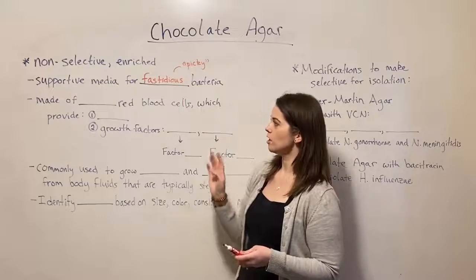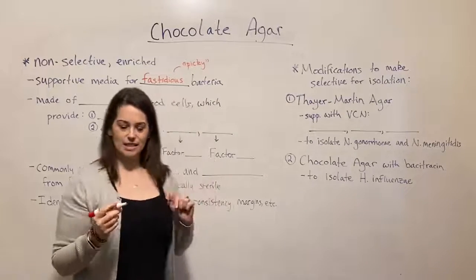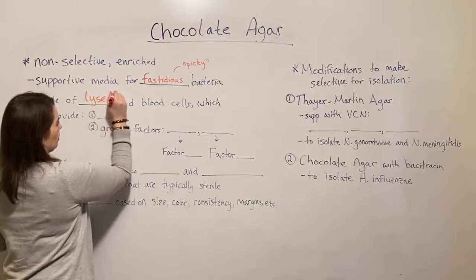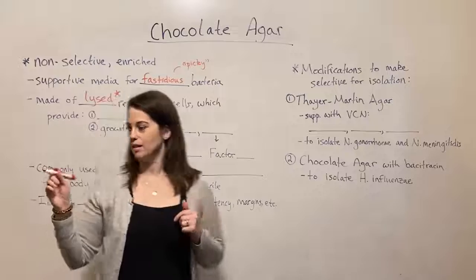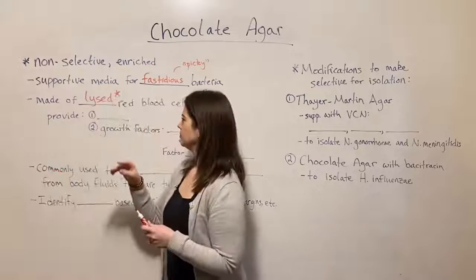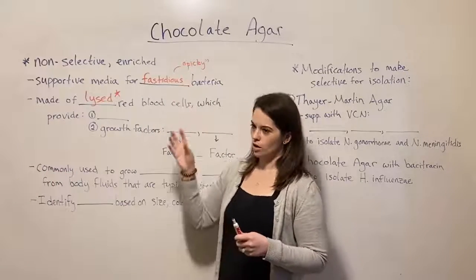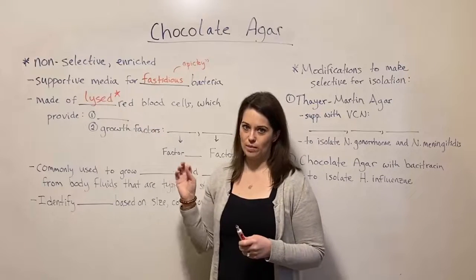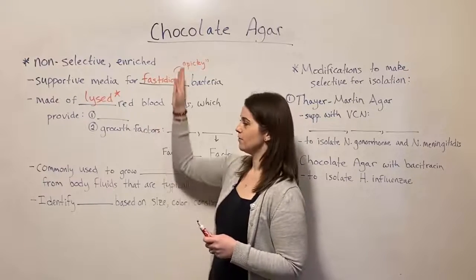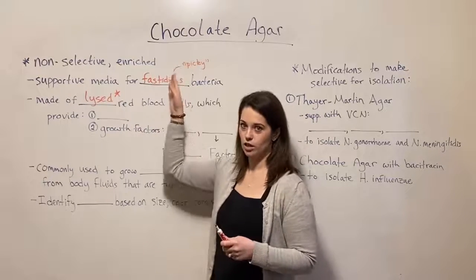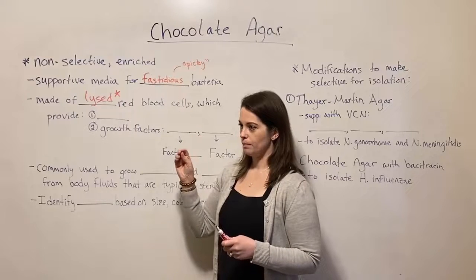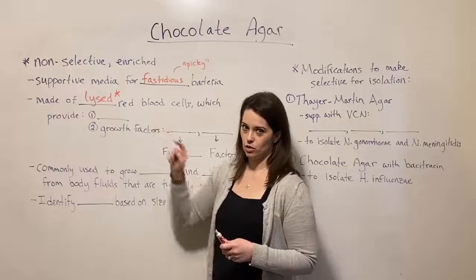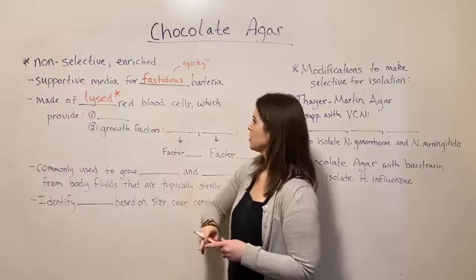The chocolate agar is made of lysed red blood cells. The reason that the chocolate agar has that brown color is because of the lysed red blood cells. And this is what makes it different. What makes chocolate agar different from a kind of normal blood agar is the fact that the red blood cells are lysed.